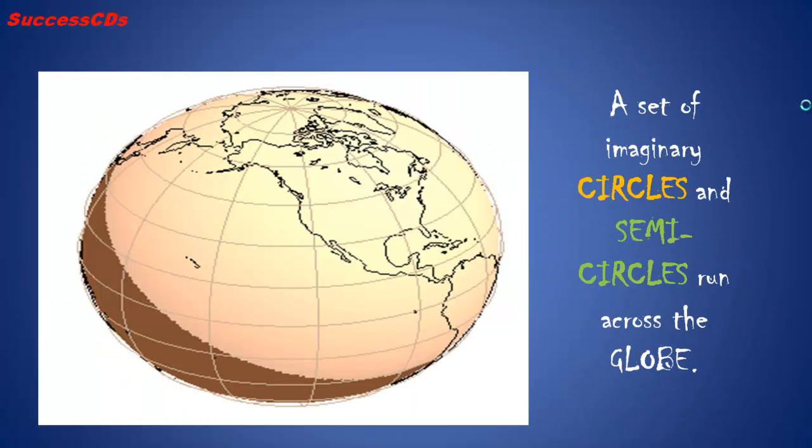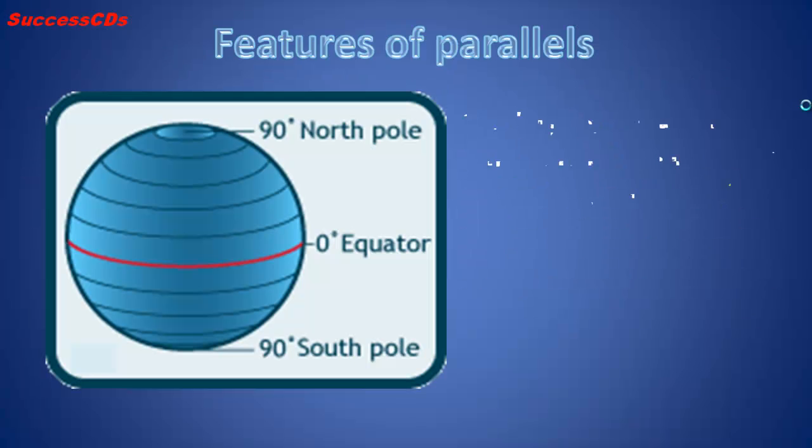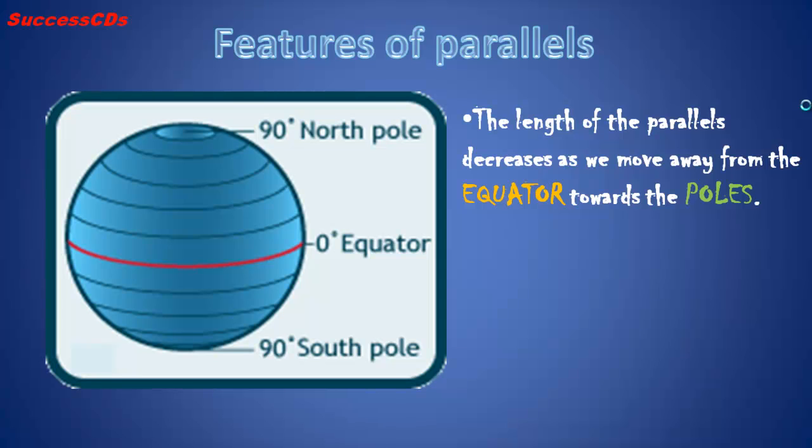A set of imaginary circles and semicircles run across the globe. The full horizontal circles are called latitudes or parallels, as they are drawn parallel to the equator. The length of the parallels decreases as we move away from the equator towards the poles. The North Pole and the South Pole are points.